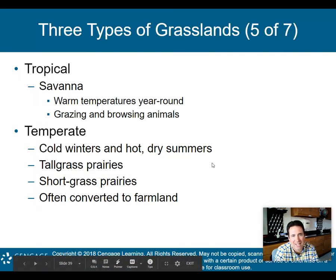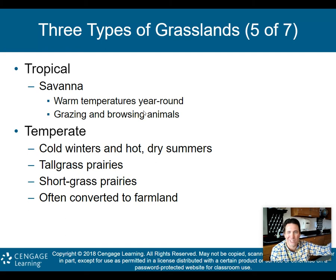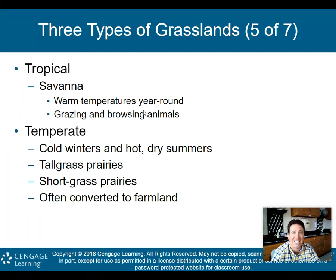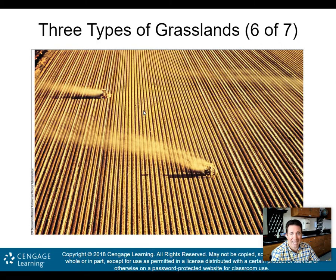Those are your three types of grasslands. Your tropical savannas have warm temperatures year-round with grazing and browsing animals — the traditional African safari. The temperate grasslands have cold winters and hot, dry summers, similar to the central plain states here in the U.S., with tall grass or short grass prairies. They are often converted to farmland — that's exactly what happens in the middle of the United States.